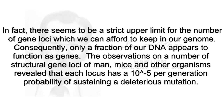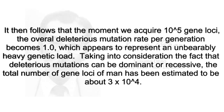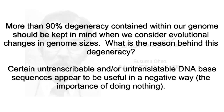Consequently, only a fraction of our DNA appears to function as genes. The observations on a number of structural gene loci of man, mice, and other organisms revealed that each locus has a 10 to the minus fifth per generation probability of sustaining a deleterious mutation. It then follows that the moment we acquire 10 to the fifth gene loci, the overall deleterious mutation rate per generation becomes 1, which appears to represent an unbearably heavy genetic load. Taking into consideration the fact that deleterious mutations can be dominant or recessive, the total number of gene loci of man has been estimated to be about 3 times 10 to the fourth. More than 90% degeneracy contained within our genome should be kept in mind when we consider evolutionary changes in genome sizes.